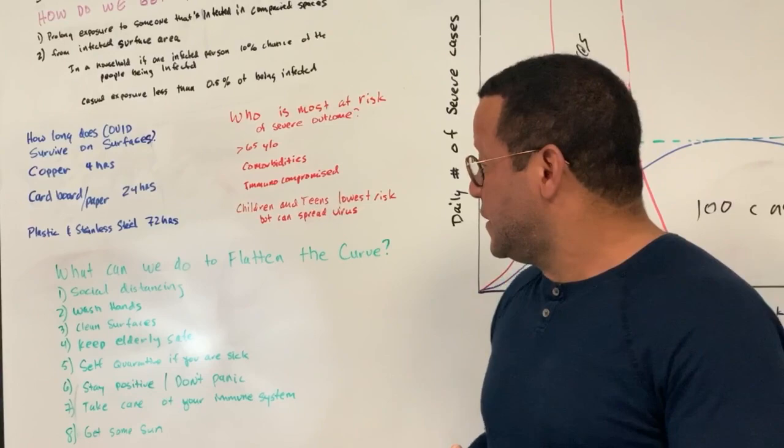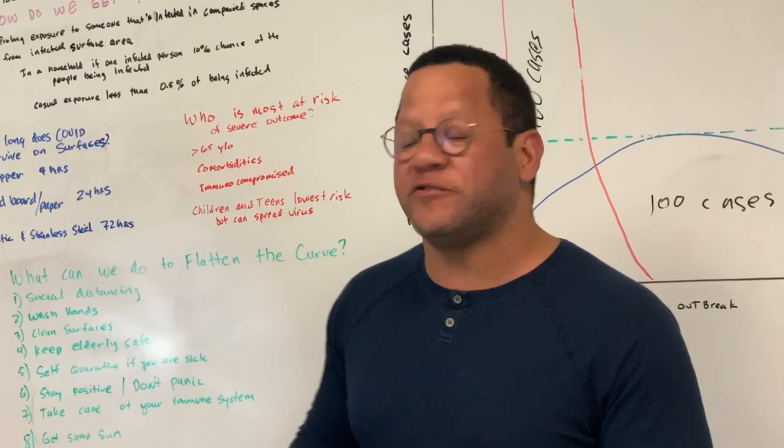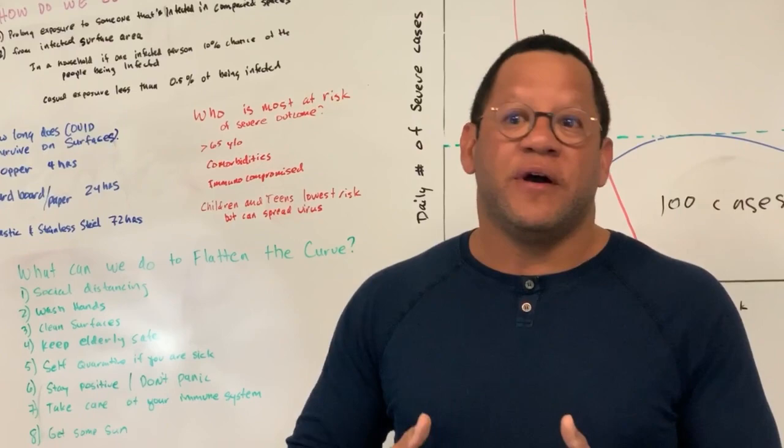Stay positive. I've told you all week, staying positive is important. Being panicky increases your cortisol levels. Decreases your immune system. You want your immune system to work at its best right now. Take care of your own immune system. Eat properly. Sleep well. Try to get some exercise. Walk around.